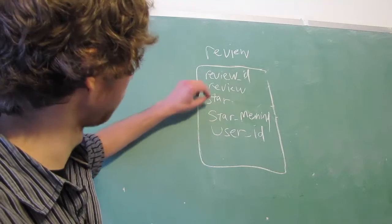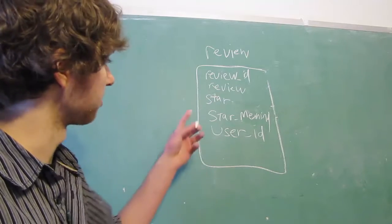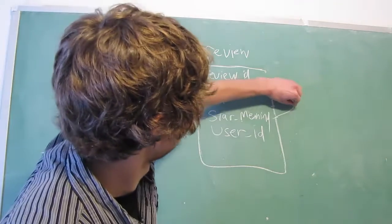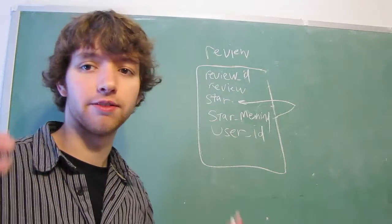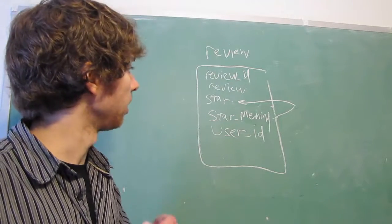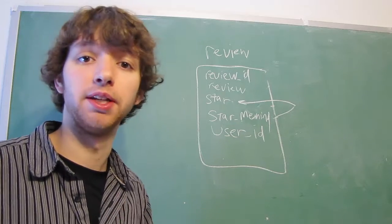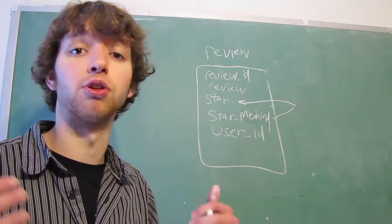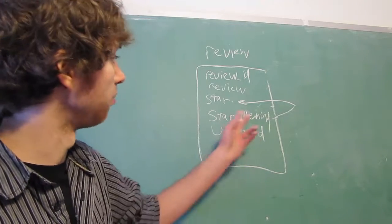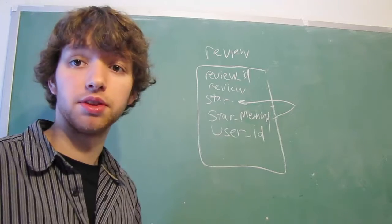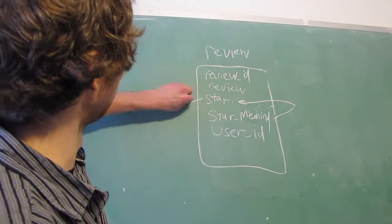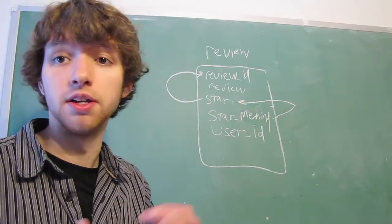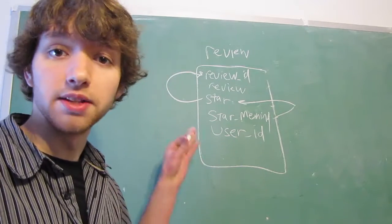Now, let's look at right here. We have an issue. This is what's known as a transitive dependency because the star meaning depends upon the star. And a way you can kind of try to figure out if it depends on it is, okay, well, if we change the star, is the star meaning going to change? Well, if we take the star and we change it from a 4 to a 3, it might go from really super okay to really average. So the star meaning is going to change. So that's a dependency. But then the star actually depends upon the actual review ID because if you change the actual review, the star is able to change. So this is known as a transitive dependency, and it is bad.